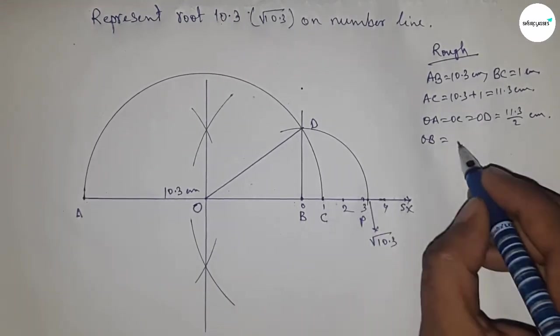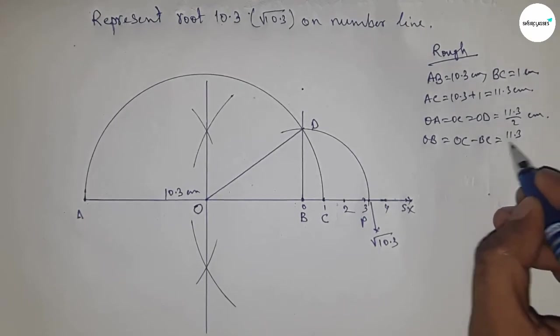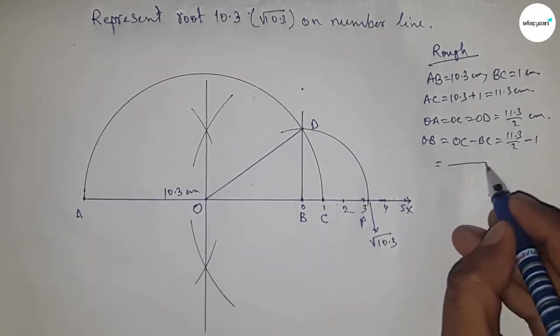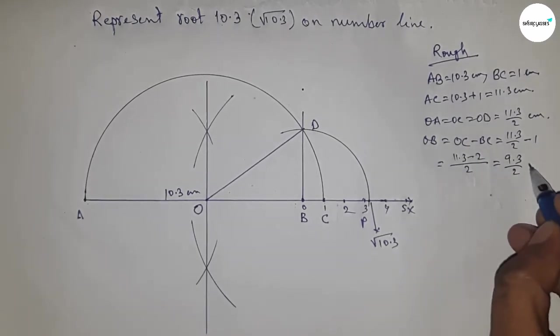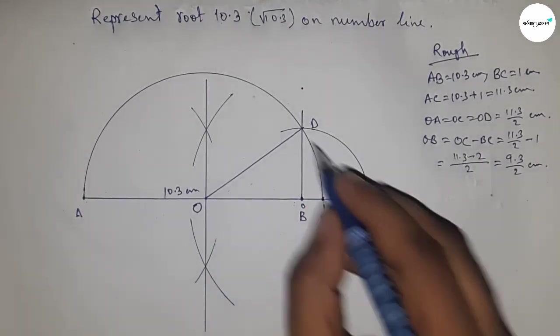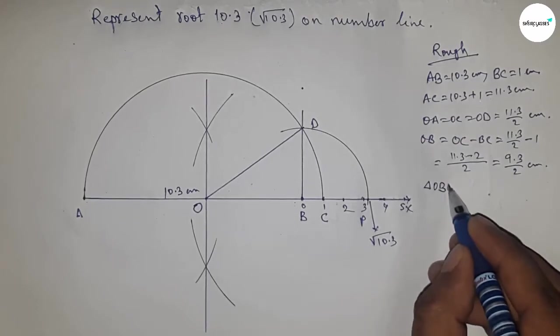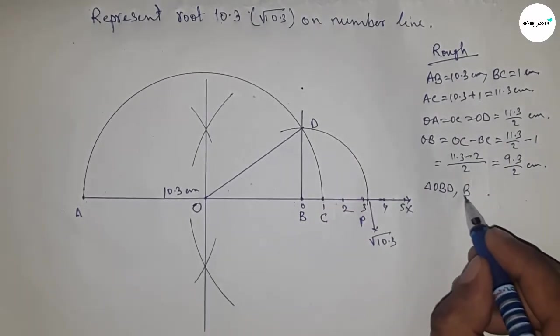Equals we can write OC minus BC. Now putting the value of OC and BC and after calculating, this is 9.3 by 2 centimeters. Now from right angle triangle OBD, we can write BD equals by Pythagorean theorem.